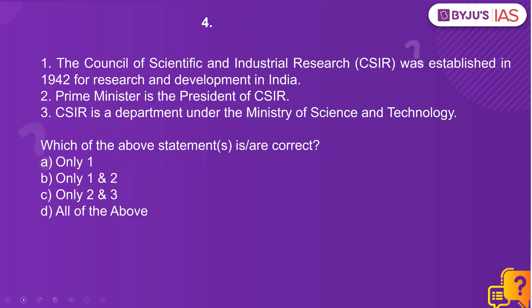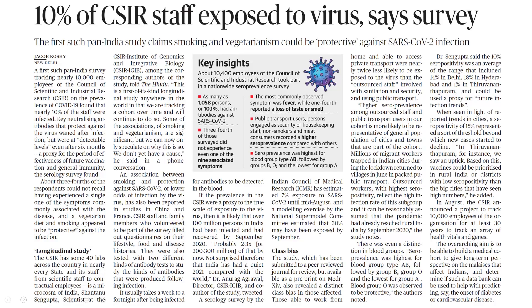Now let's look at question number four on CSIR — the Council of Scientific and Industrial Research. It was established in 1942 for research and development in India — correct. The Prime Minister is the President of CSIR — correct. CSIR is a department under the Ministry of Science and Technology — no. Although funding is received from the Ministry of Science and Technology, CSIR is an autonomous body. So which of the above statements are correct? Only 1 and 2. The context is today's The Hindu newspaper: '10% of CSIR staff exposed to virus, says a study.'